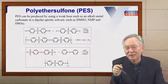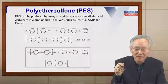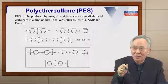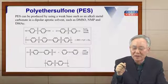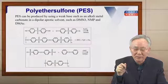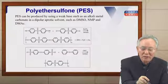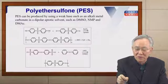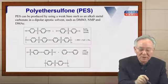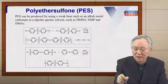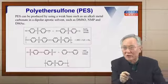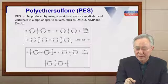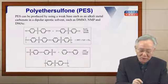Let's move on to polyethersulfone, PES, which is also very important in engineering plastics. PES can be produced using a weak base such as alkali metal carbonate as catalyst in dipolar aprotic solvents like dimethyl sulfoxide, N-methylpyrrolidone, or dimethylacetamide. Dihydroxydiphenyl sulfone is reacted with dichlorodiphenyl sulfone to produce polyethersulfone, with removal of alkali chloride, water, and CO₂.